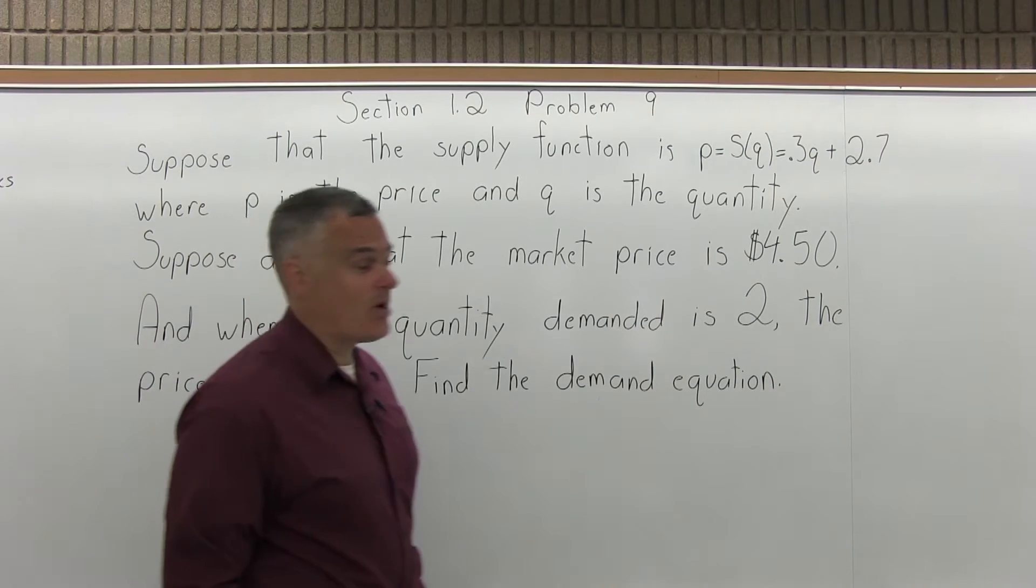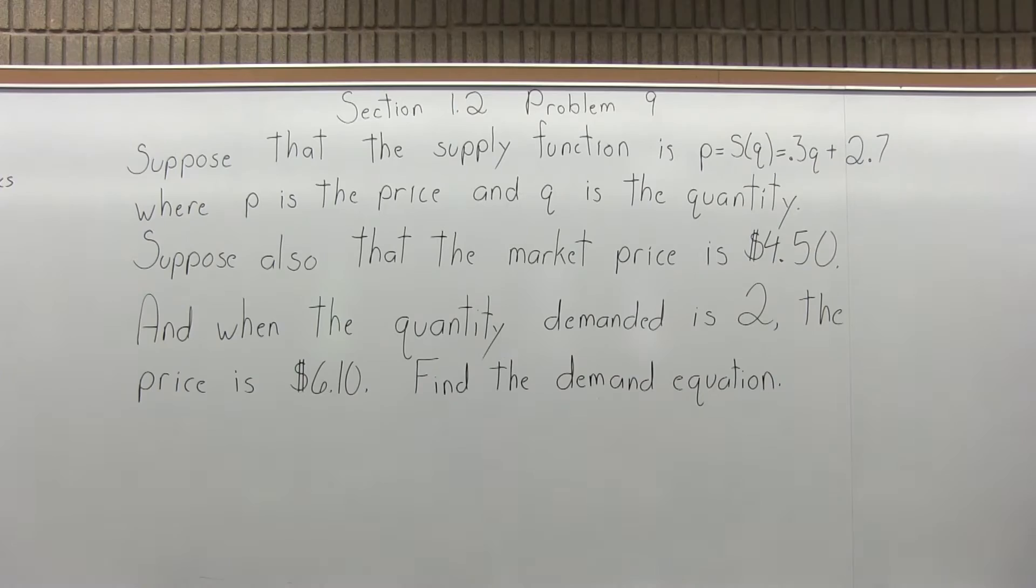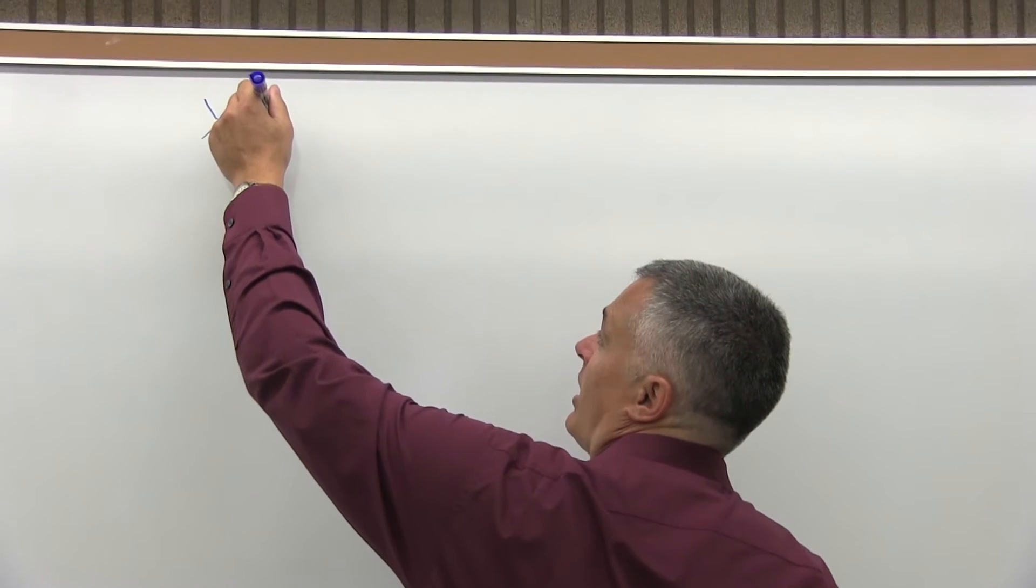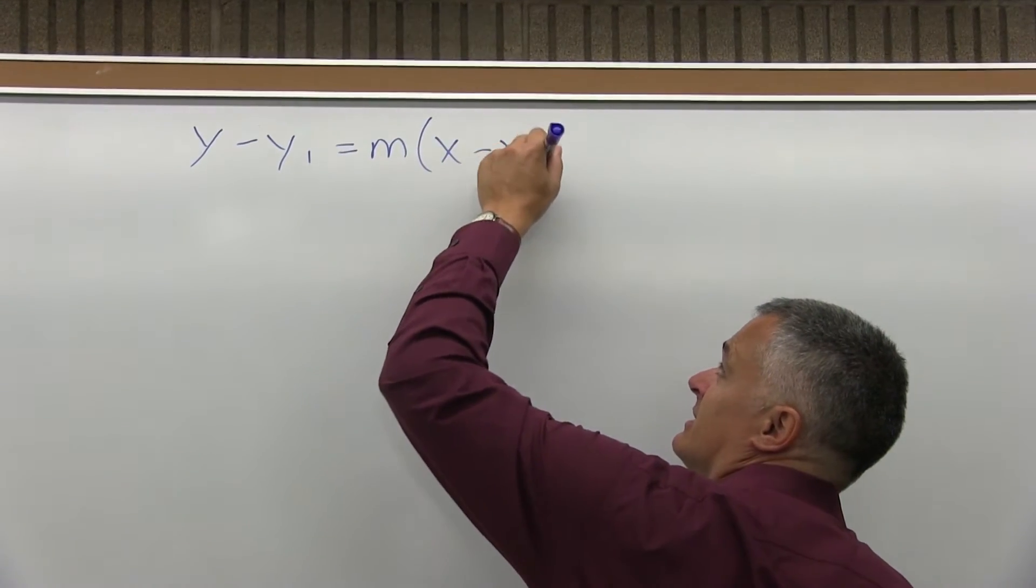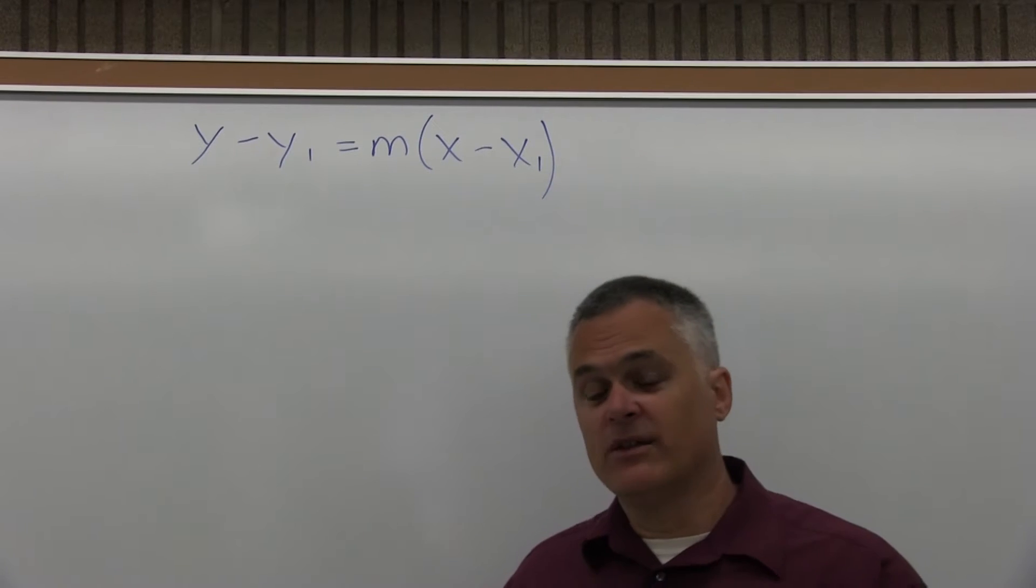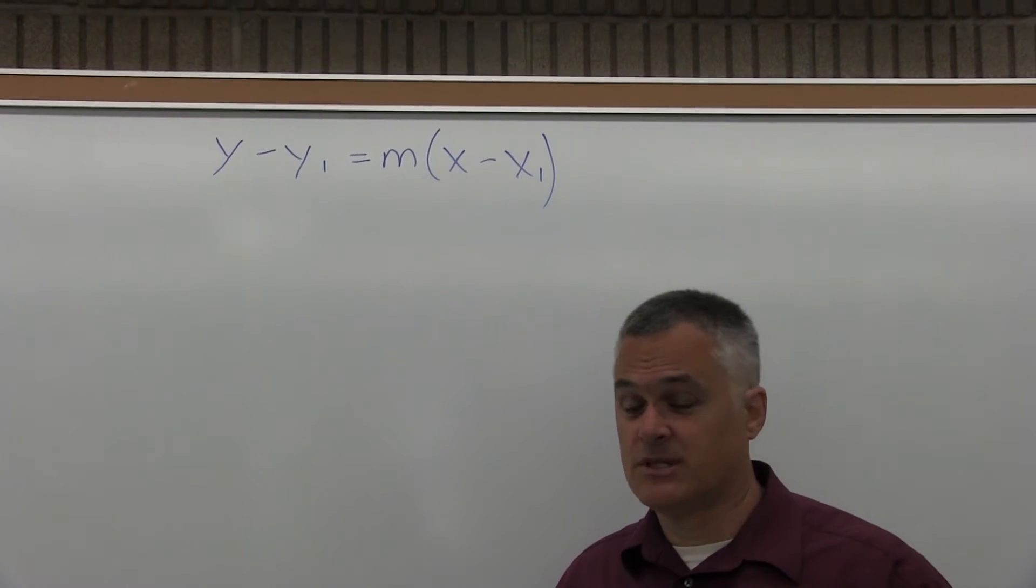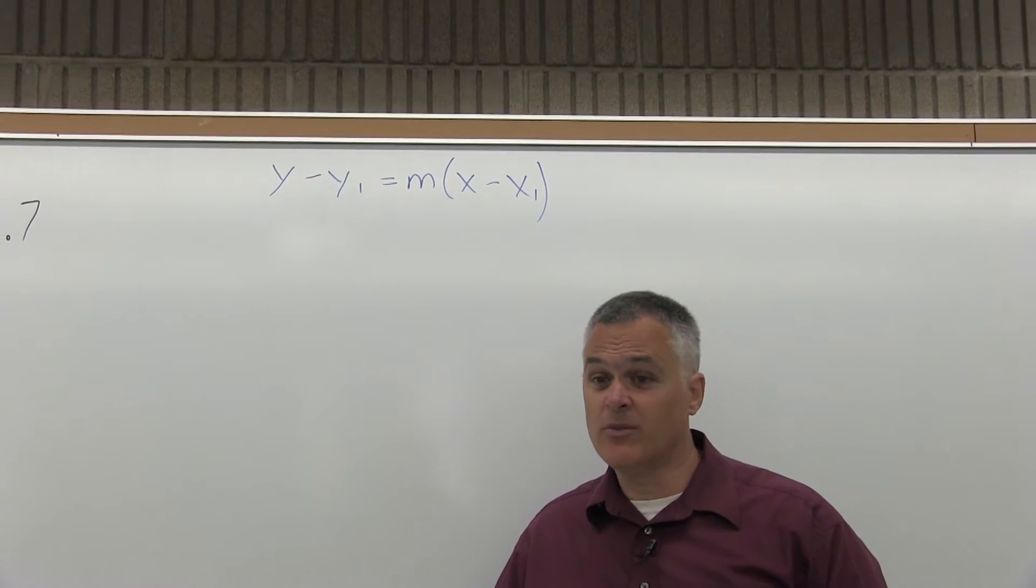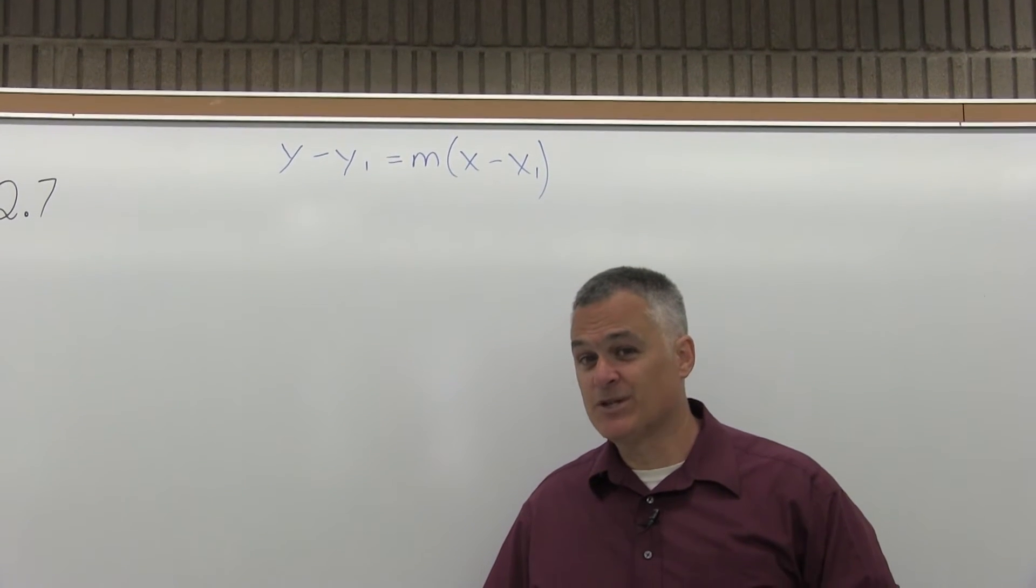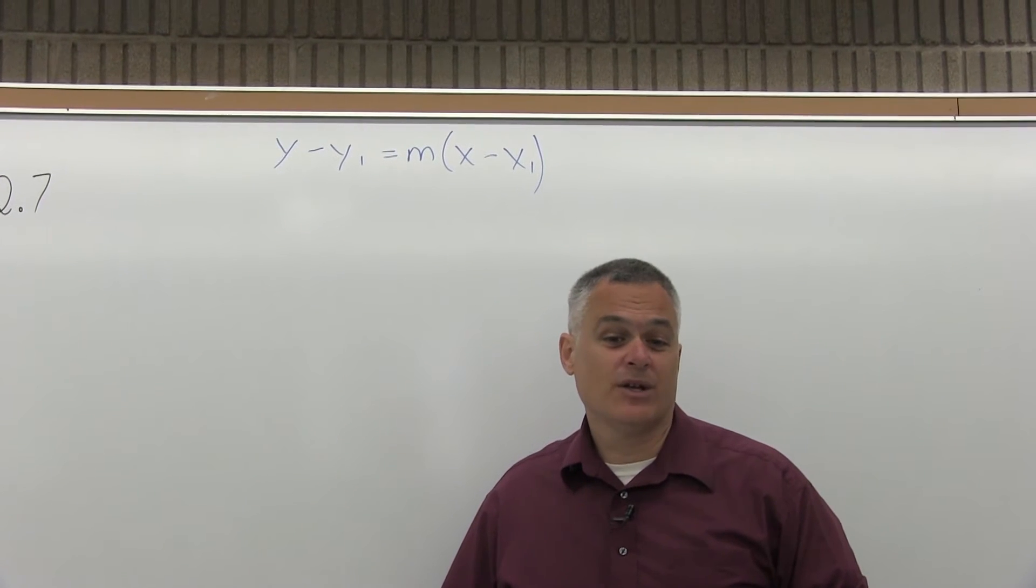This is a difficult problem. They're giving you just enough information to find the demand equation. What you need to remember is the demand equation is a linear equation. To find a linear equation, we're going to use the formula Y minus Y1 equals M times X minus X1. This formula will help us find almost all linear equations, whether it's supply, demand, or something else. We need two points or a point and a slope.